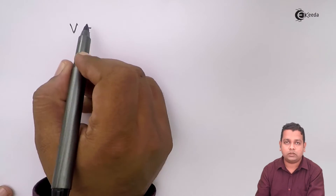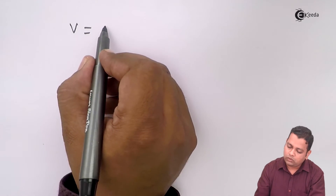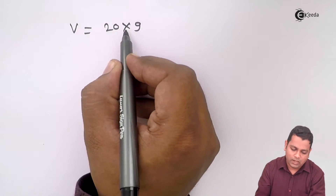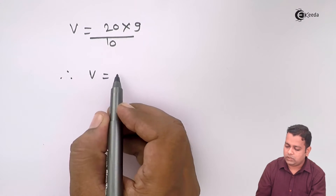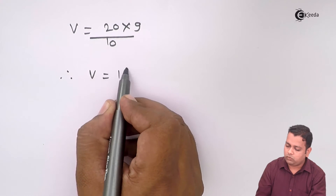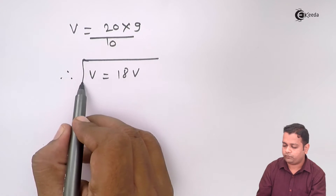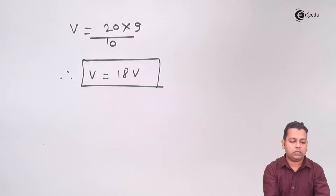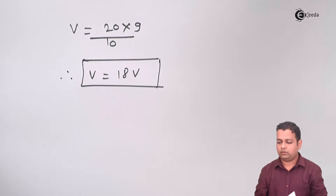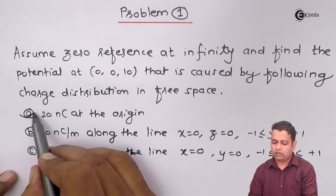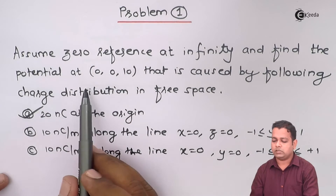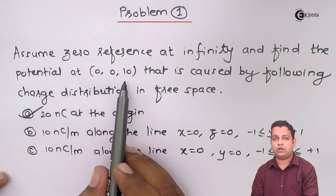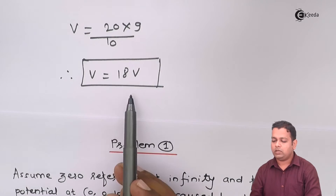For part A, after simple calculation we get V = 18 volts. So for the given problem statement in part A, we have found the potential at the field point and it has the value of 18 volts.